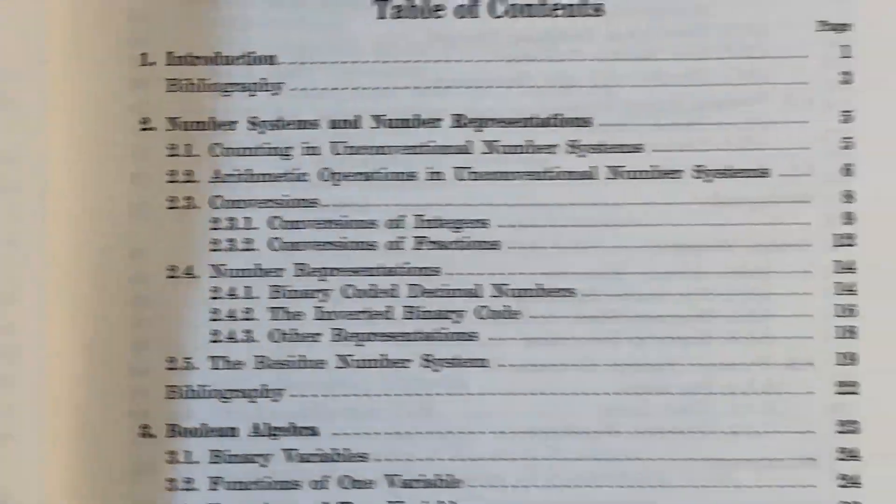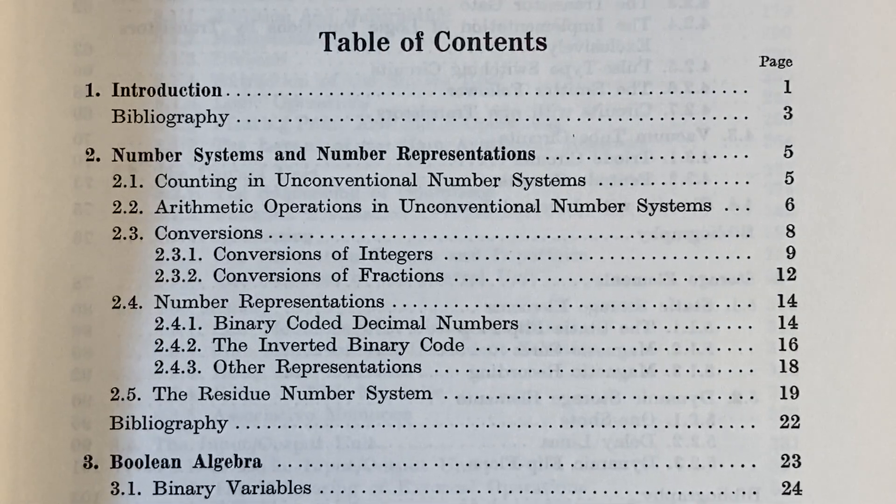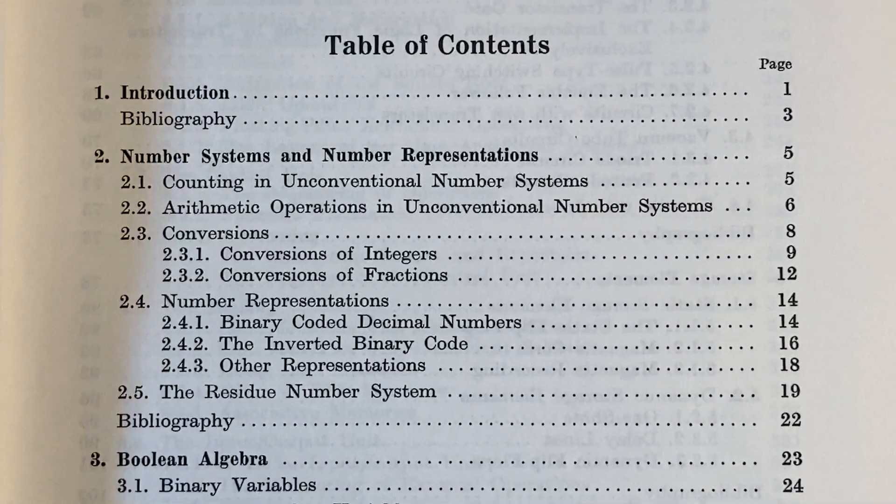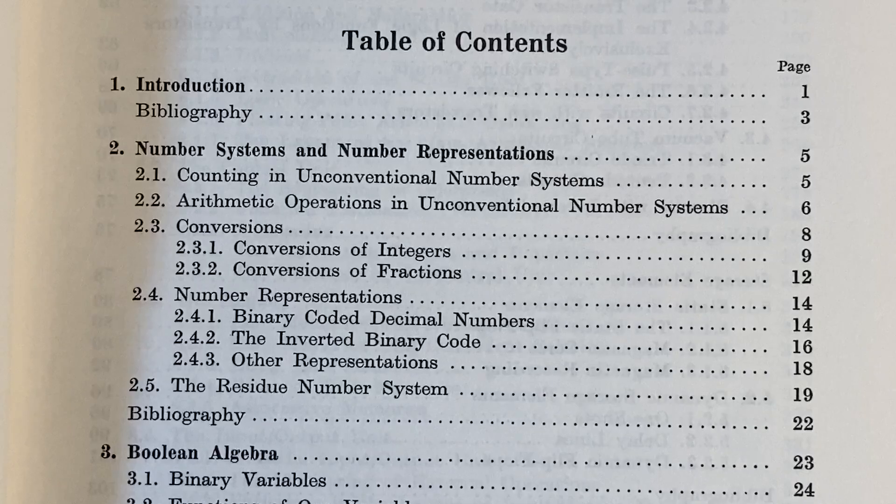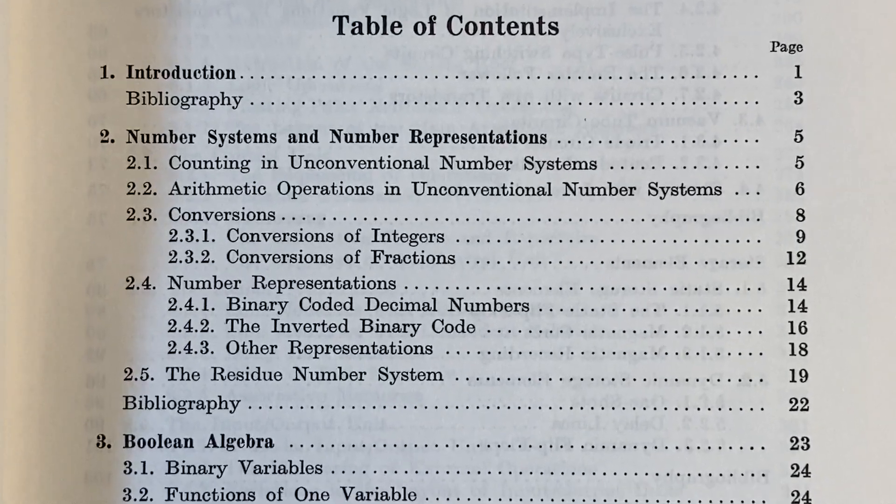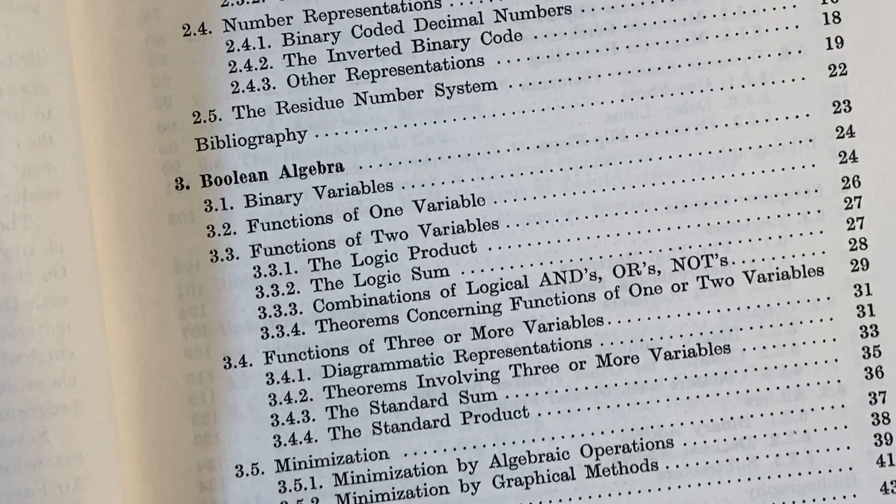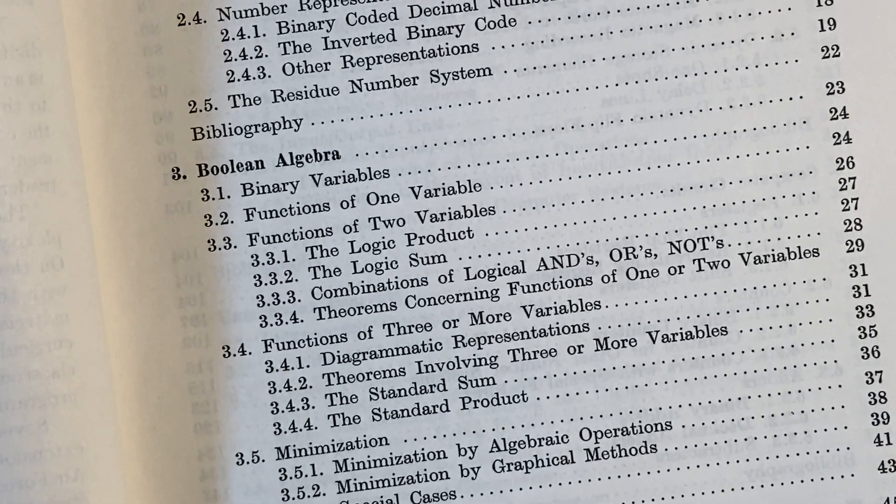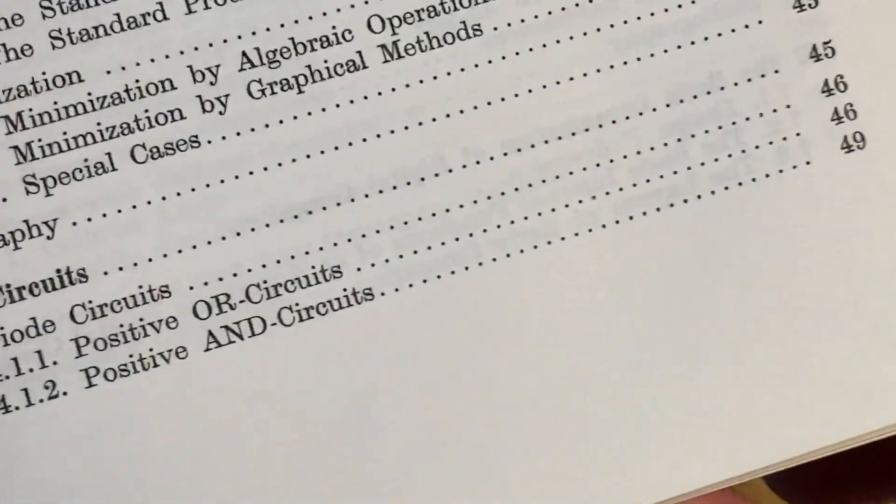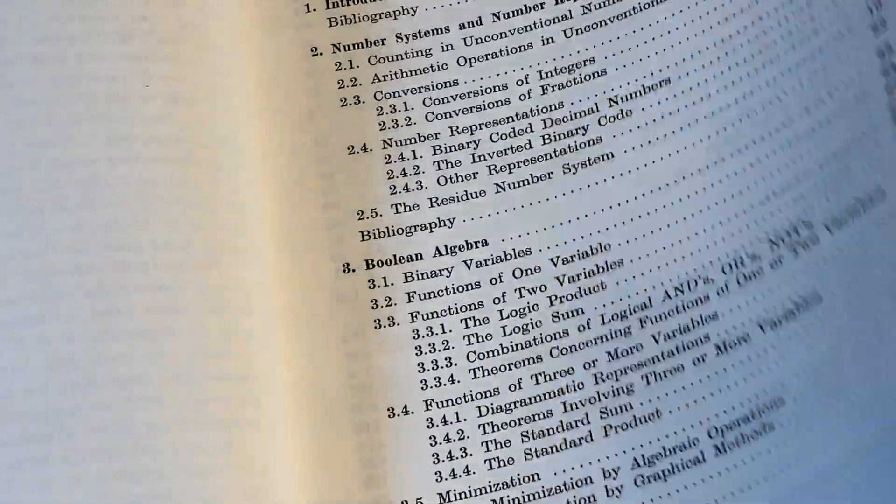And here are the contents of this book. Table of contents. Number systems and number representations. Lots of topics there. Boolean algebra. Then we have logic circuits. I actually have some videos on that.